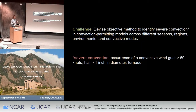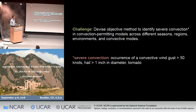We'd like to devise objective methods to identify severe convection in the models across a variety of seasons, regions, and different environments, which generally lead to different convective modes. Here I'm defining severe convection as the set of criteria forecast by NOAA on a daily basis: the occurrence of convective wind gusts greater than 50 knots, hail greater than one inch in diameter, or the presence of a tornado.